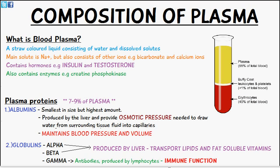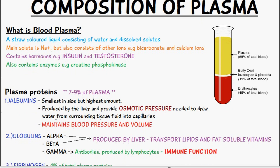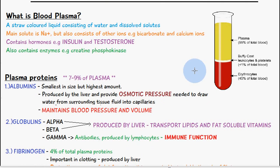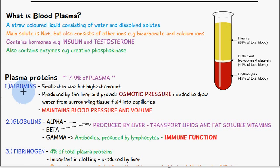The plasma proteins consist of 7-9% of plasma. The three main types are albumins, globulins, and fibrinogen.